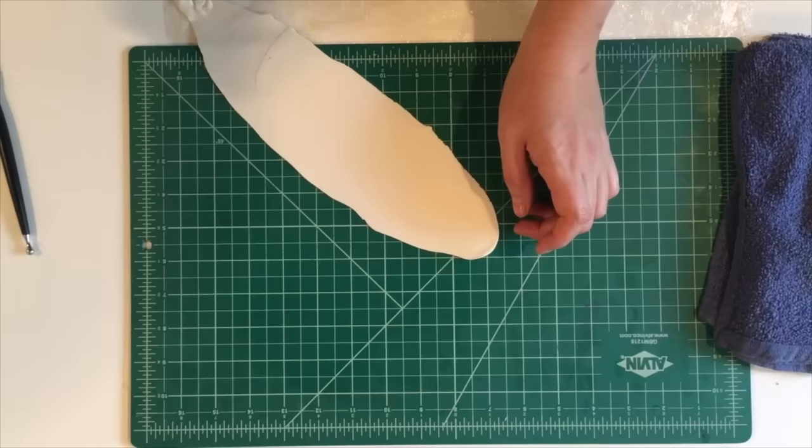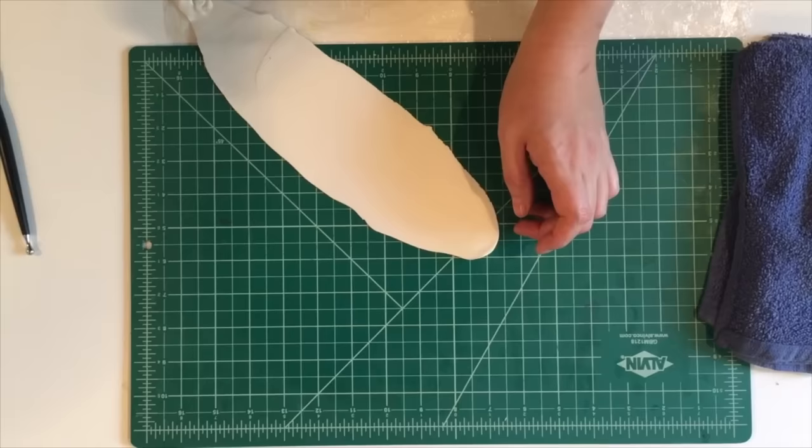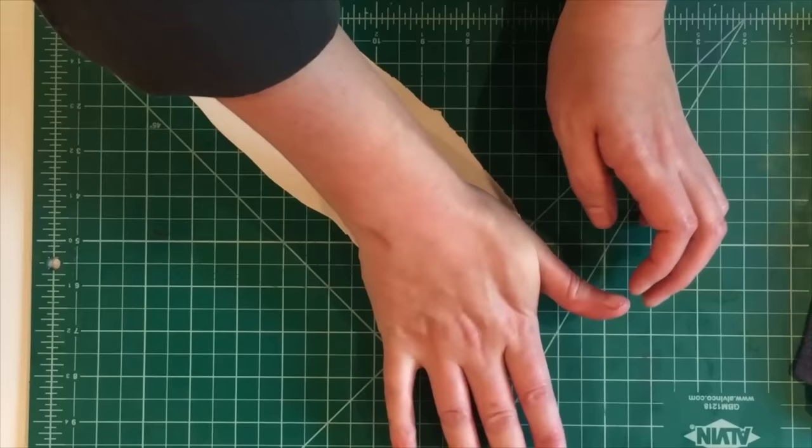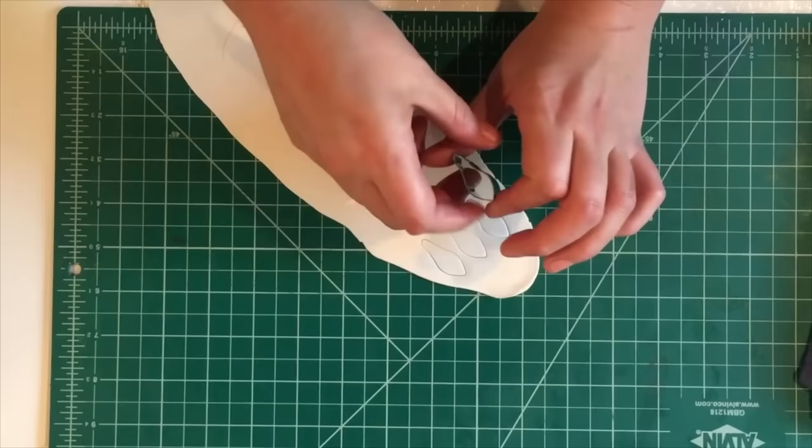So I've rolled another piece of sugar paste once again to about a millimeter. And I'm going to use the smallest petal cutter to cut out 12 to 15 petals. 12 is usually my happy number, but sometimes I'll cut the extra three just in case.